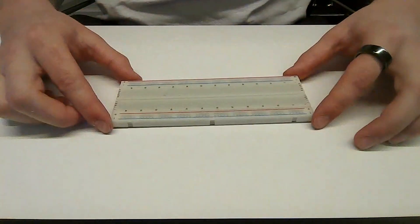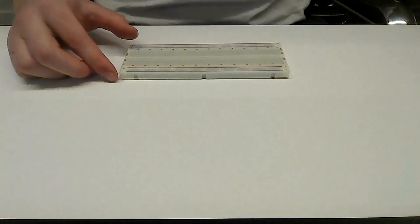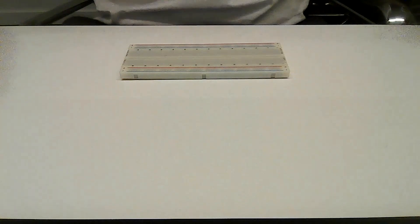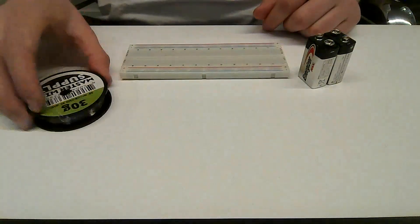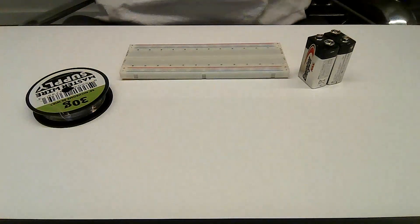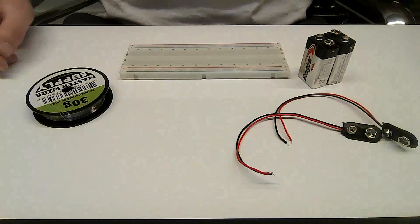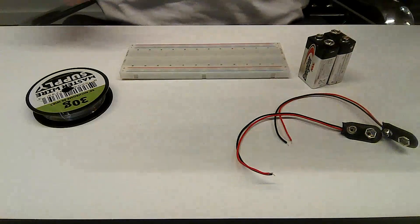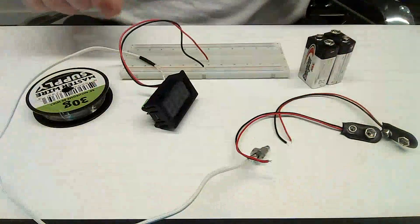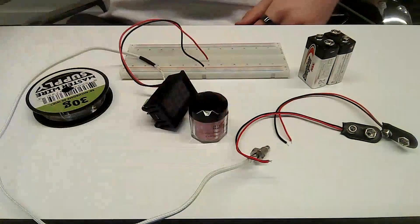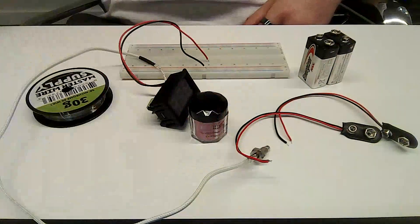So first, we'll go through the items. First, we have our breadboard here, two 9-volt batteries, our 30-gauge wire, two battery snaps for the batteries, our LED display, and then thermochromic pigment and glue.